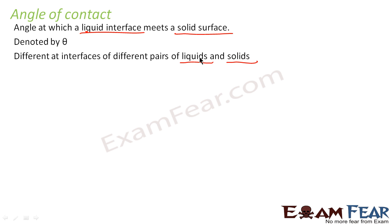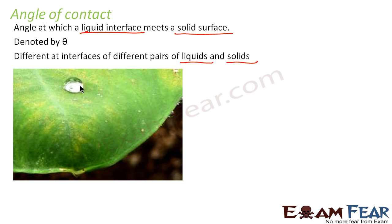It is different for every different pair of solid and liquid. Now if you take a real life example, you would have seen a droplet of water on a lotus leaf. This water droplet has a surface which is in contact with the solid surface of the leaf. At this surface of contact, the liquid surface meets some angle with the solid surface — that angle is known as the angle of contact, generally denoted by theta.